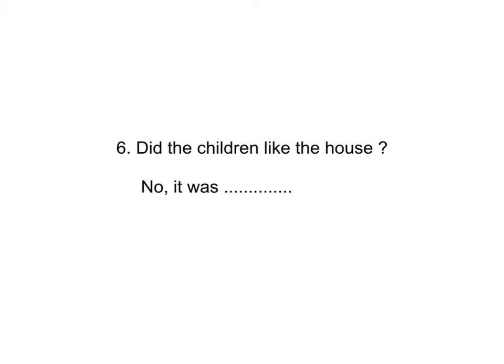Number six: did the children like the house? Children 是小朋友啦，like the house，喜不喜欢那家屋呀？No, it was... 想一想先。Too far from school. Far 是距离啦，是远啦，from school，离开学校的距离实在太远啦。So, did the children like the house? No, it was too far from school.